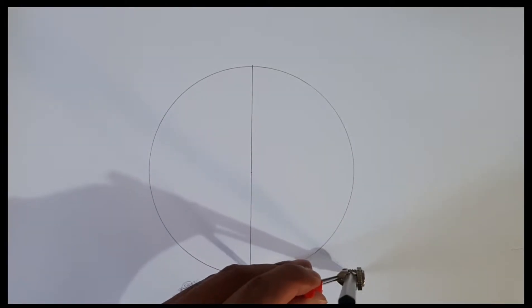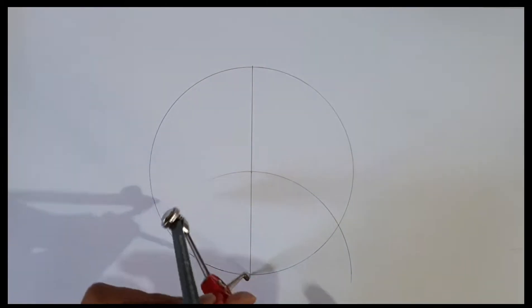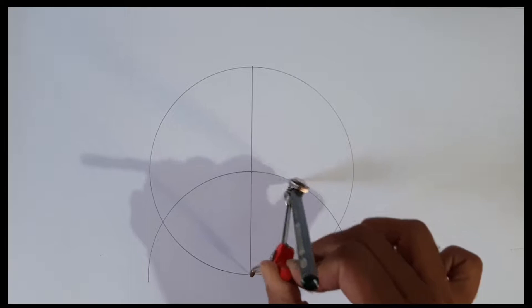Draw two semicircles by placing the compass needle on points where the straight line meets the main circle.